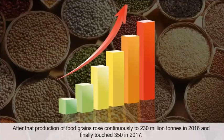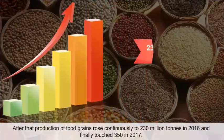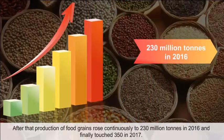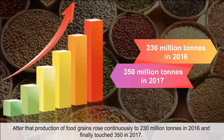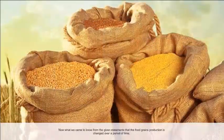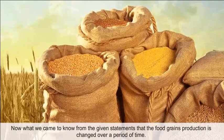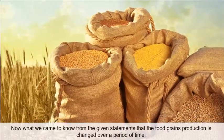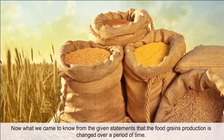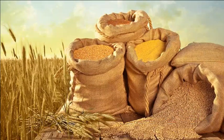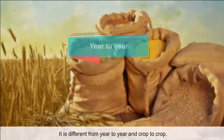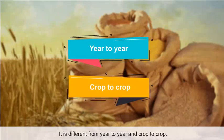Production of food grains rose continuously to 230 million tons in 2016 and finally touched 350 million tons in 2017. From these statements, we can see that food grain production changed over a period of time — it differs from year to year and crop to crop.